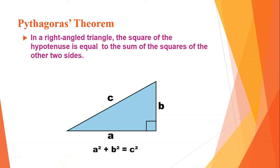Welcome back dear students to video number 2 for Standard 7 Mathematics. We are discussing Chapter 13, Pythagoras' Theorem. In the previous video, we discussed what Pythagoras' Theorem is: in a right-angled triangle, the square of the hypotenuse is equal to the sum of the squares of the other two sides. According to this, we have a squared plus b squared is equal to c squared.